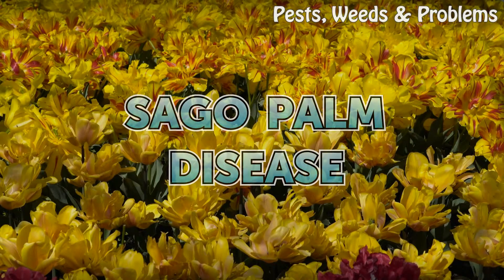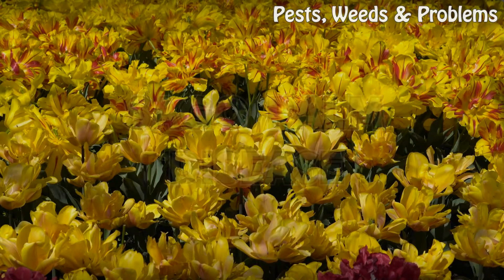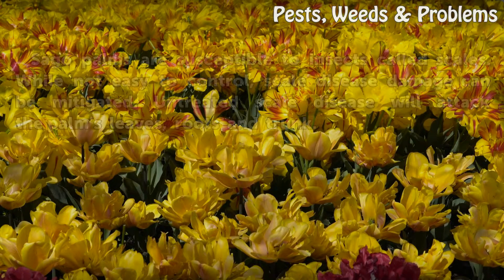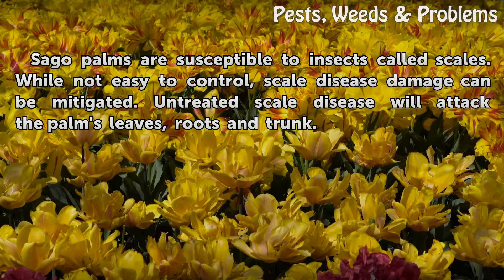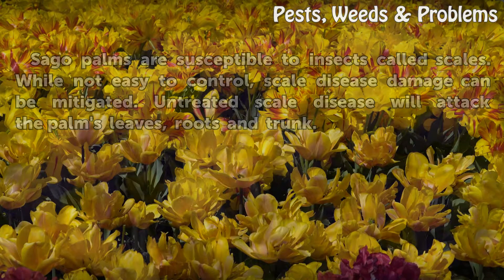Saco palm disease. Saco palms are susceptible to insects called scales. While not easy to control, scale disease damage can be mitigated. Untreated scale disease will attack the palm's leaves, roots and trunk.